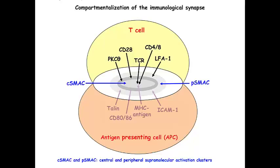T-cell antigen receptor engagement triggers signaling cascades that result in the recruitment of multiple effector molecules to the immune synapse, including PKC Theta, which localizes to the C-SMAC.